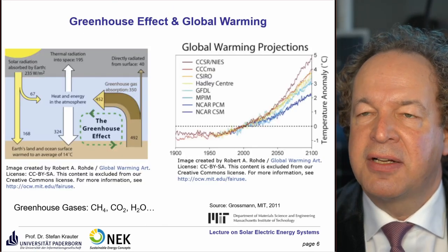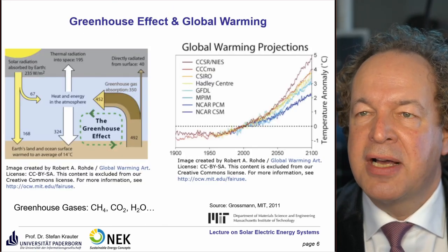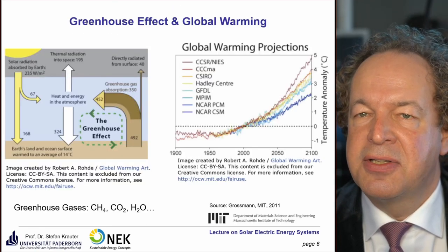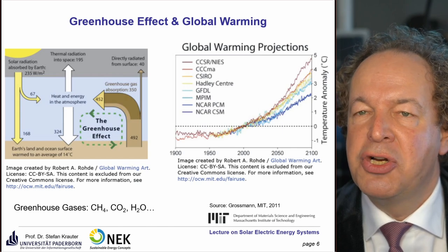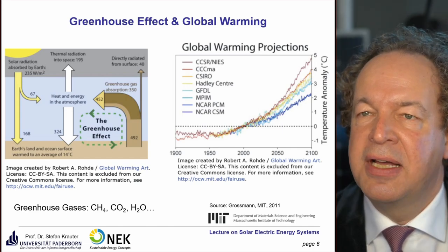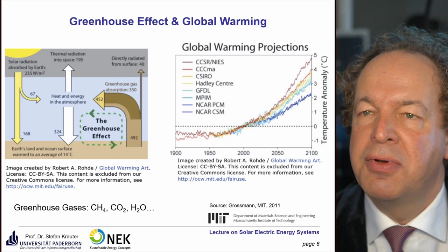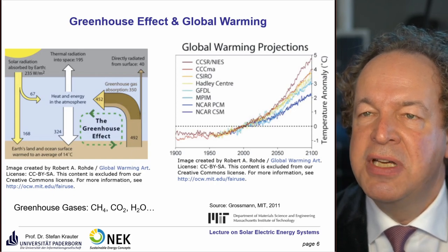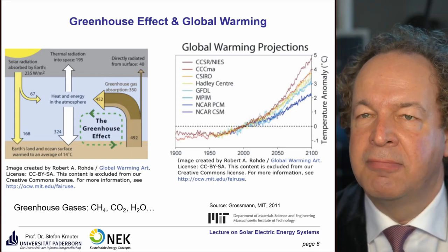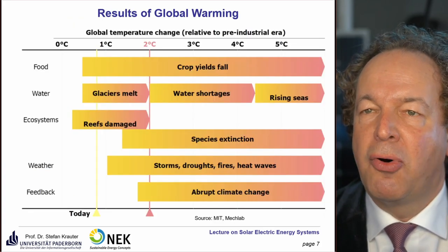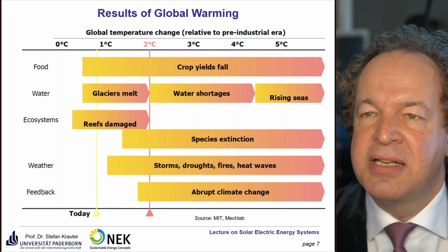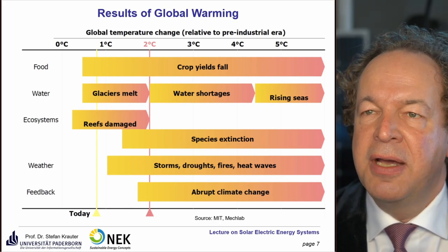The greenhouse effect: carbon dioxide is transparent in the visible range but not transparent in the infrared range. The temperature will increase from two to five degrees Celsius. Beyond some tipping points, the impacts will suddenly be rather large.